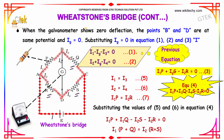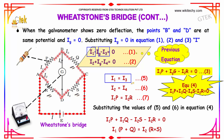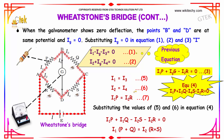If the galvanometer shows zero deflection, the points B and D are at the same potential, so IG is equal to 0. Substituting IG equal to 0 in equations 1 and 2, we get I1 equal to I3 and I2 equal to I4. And from the third equation, I1P is equal to I2R.